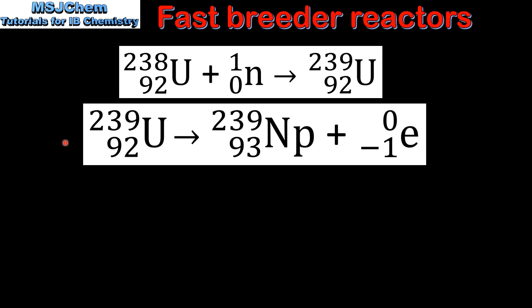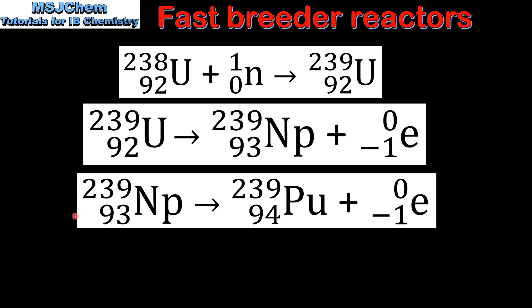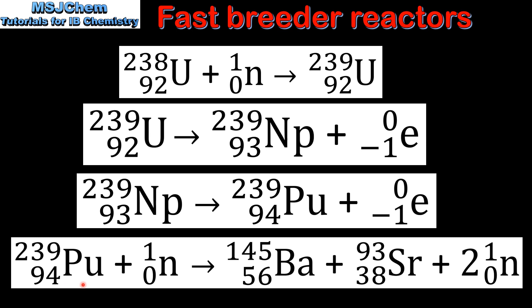Next, the uranium-239 undergoes beta-minus decay to form neptunium-239. Next, neptunium-239 also undergoes beta-minus decay to form plutonium-239. And finally, the plutonium-239 is bombarded by neutrons and undergoes nuclear fission.